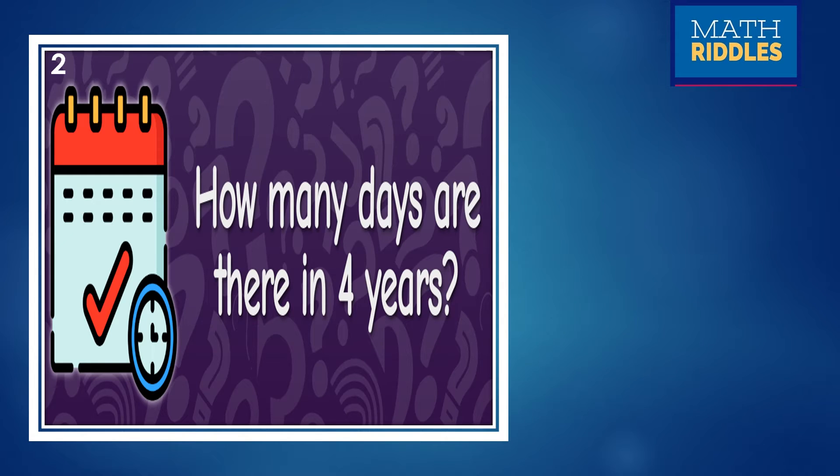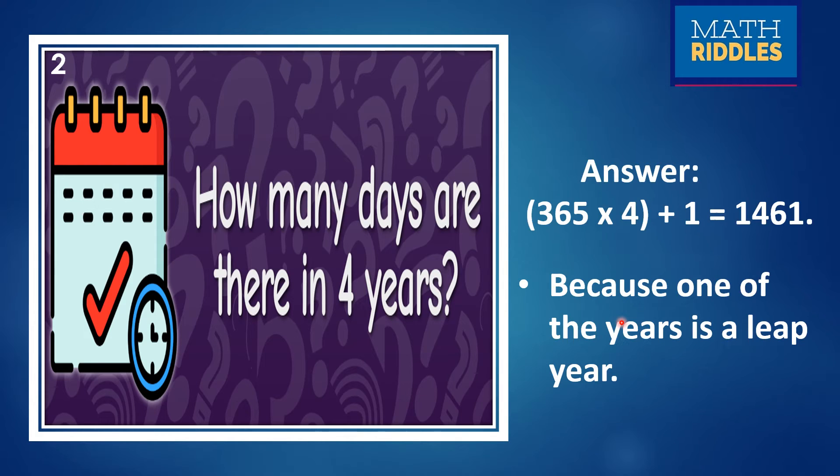The second question is how many days are there in 4 years? Quickly, you can solve it. One year is 365 days so you can solve how many days will be there in 4 years. You can start calculating quickly. Hope you are nearer to the answer. And the answer is 1461 days. As it is 4 years there will be 1 leap year means 1 day extra we will get. So, you have to add 1 to the answer. 365 times 4 plus 1 you have to do because there will be leap year.